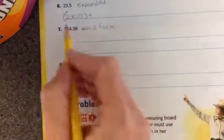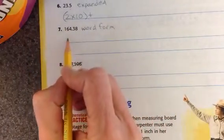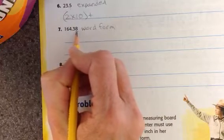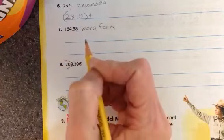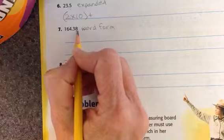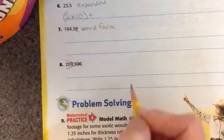All right, word form, you're going to say the number and write it down. Now, this is, I'm going to be looking for your THS at the end because this is in the hundredths place, so I should see that at the end.